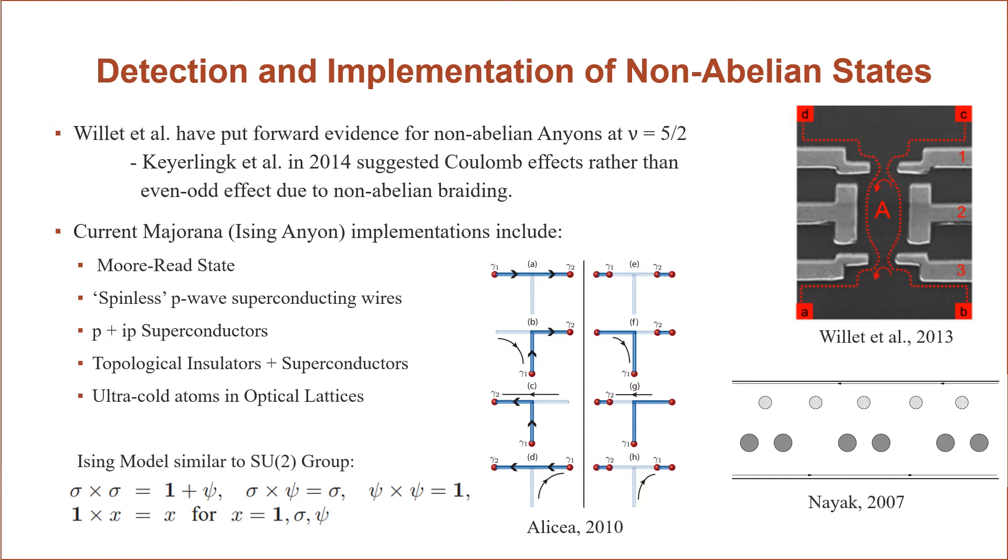However, there has been a great deal of progress experimentally and theoretically for implementations of non-abelian anyons. And specifically on this slide, we'll focus on Majorana or Ising anyons, which are sort of the most basic state, and they're related to the 5 halves state. So implementations include the Moore-Read state, a spinless p-wave superconducting wire, which is seen in this diagram by Alicea, where you have a wire with Majorana zero modes on the end that are then exchanged using another wire, p plus ip superconductors, topological insulators plus superconductors, and then ultra-cold atoms in optical lattices. And you can see the fusion statistics on the bottom left if you're interested. We're not going to focus on that as of now. You can also look to the bottom right for the way in which, hypothetically, we use these anti-dots to both hold the non-abelian anyons in place and move them around and braid them.